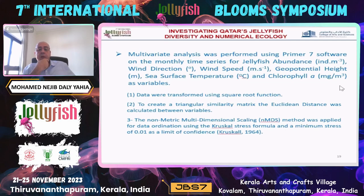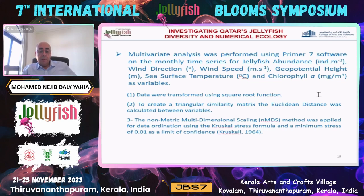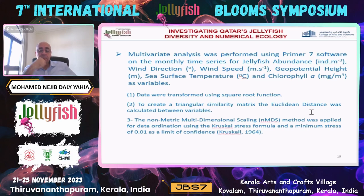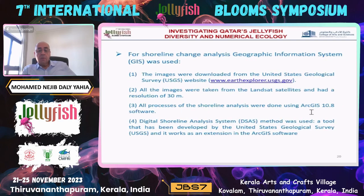Using statistical software such as Primer 7, the main variables analyzed include jellyfish abundance of the scyphozoans, wind direction, wind speed, geopotential height, and sea surface temperature profile. In general we transform our data using a square root function, use Euclidean distance to create the triangular similarity matrix, and apply non-metric multidimensional scaling (NMDS) to ordinate our data.